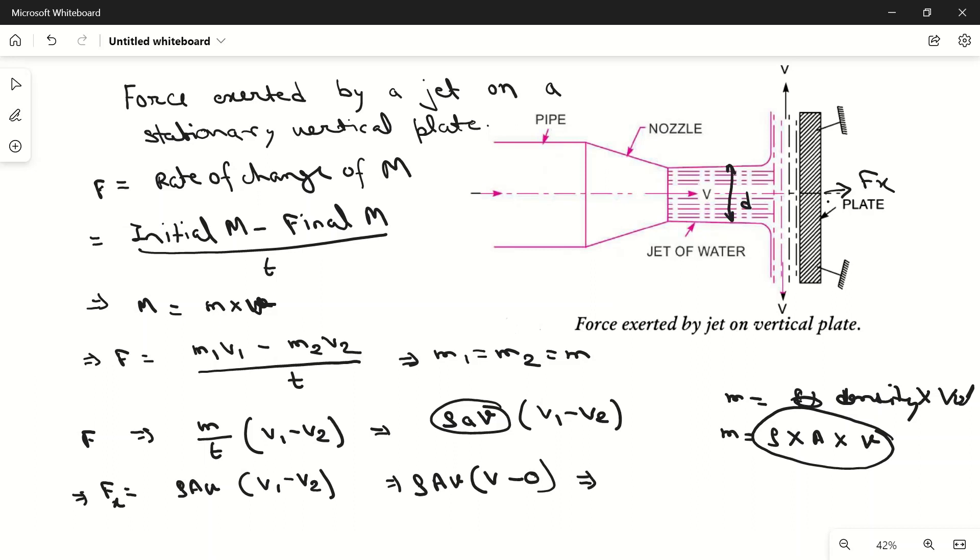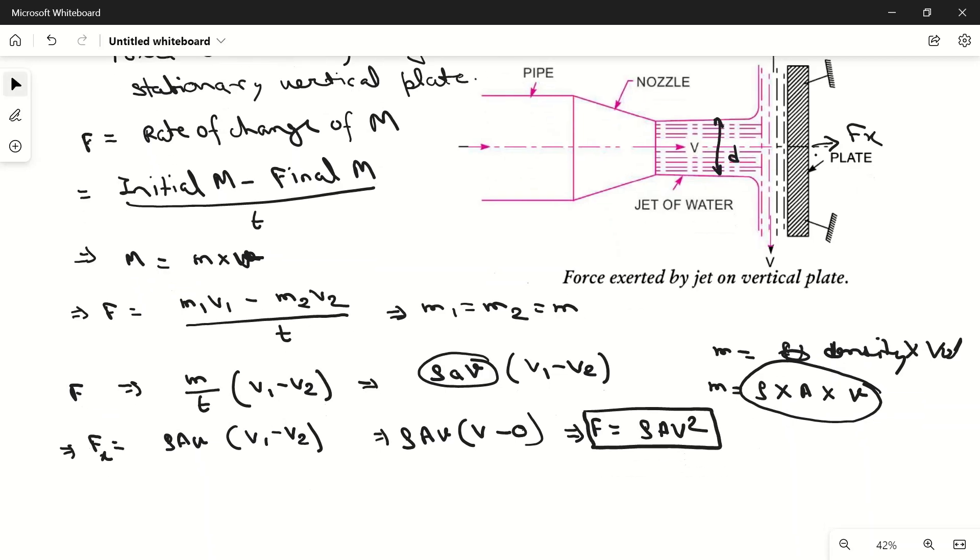So force will become rho AV square. This is force. If we want to calculate the area A, then this will become pi by 4 d square because it is circular. So if we put this value, F is equal to rho pi by 4 d square into V square.